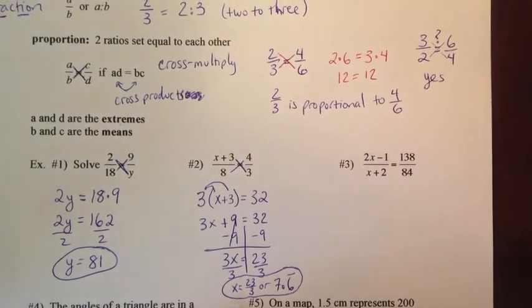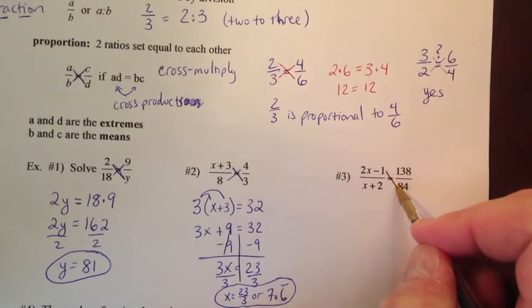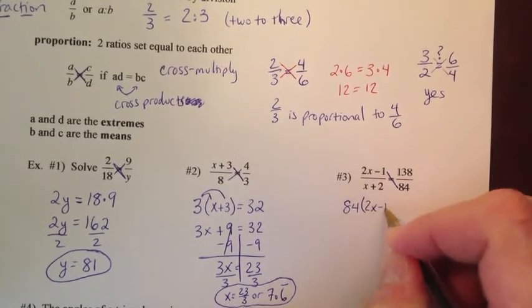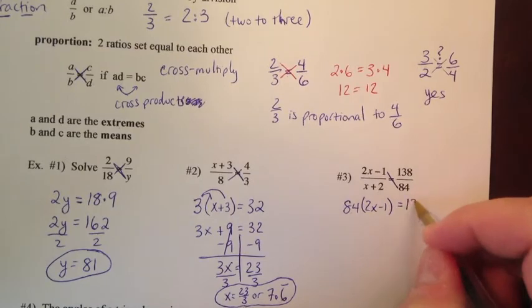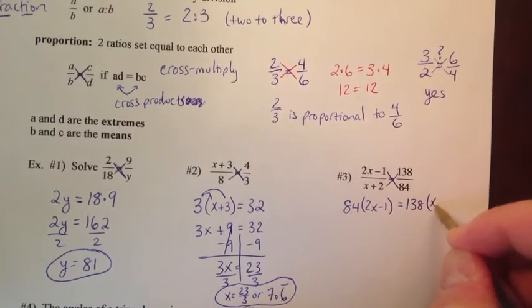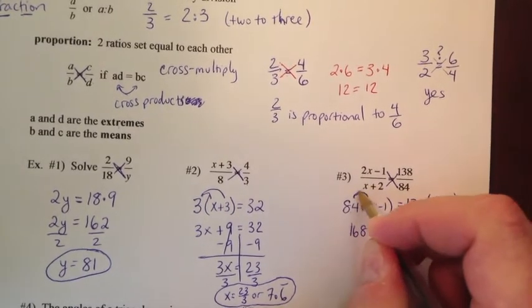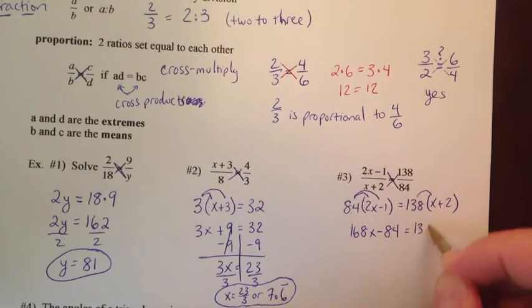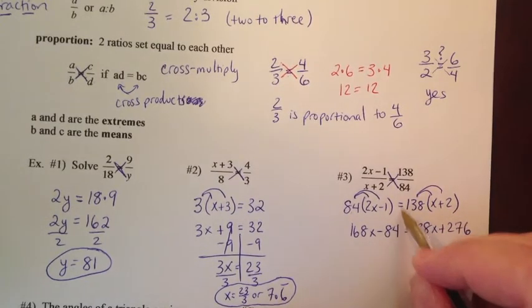Number 3. Now this is a little more complicated, this proportion. But the process doesn't change. We're going to cross-multiply. The 84 is multiplying 2X minus 1. So I've got to put that 2X minus 1 in parentheses. 84 is multiplying all of it. And then we have 138 times X plus 2 in parentheses. So now you distribute. 84 times 2X is 168X. 84 times minus 1 is negative 84. 138 times X is 138X. 138 times 2 is 276. And remember, I have to put an equal sign here. This is like a left side and a right side. They're the same.